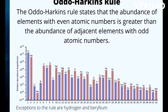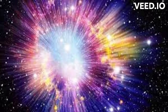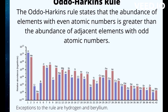Elements that serve as two exceptions to the Oddo-Harkins rule are hydrogen, atomic number 1, and beryllium, atomic number 4. Hydrogen is the most abundant element in the universe. It is more abundant than helium because of its creation in the Big Bang. However, stars continuously fuse hydrogen into helium. In the distant future, hydrogen will follow the even-odd rule.